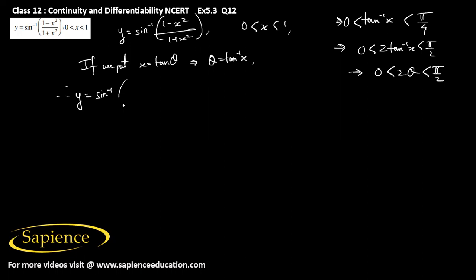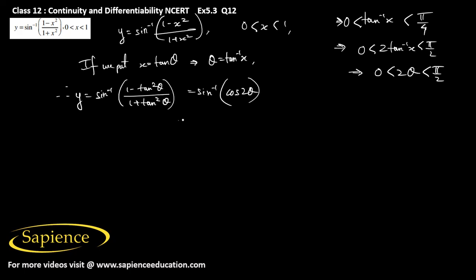Therefore y equals sin inverse of (1 minus tan square theta) by (1 plus tan square theta). This can be written as sin inverse of cos 2 theta, using the standard trigonometric identity.